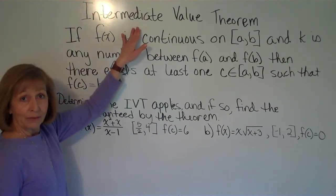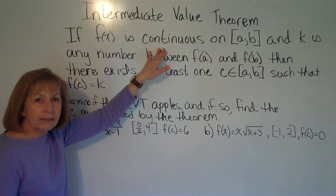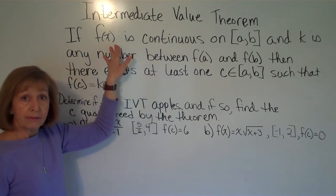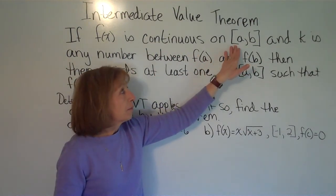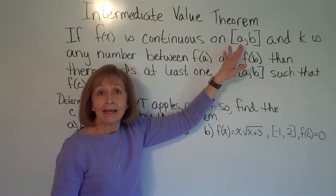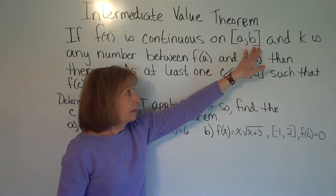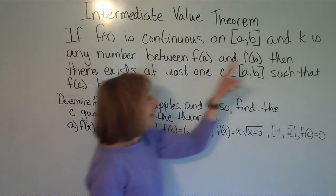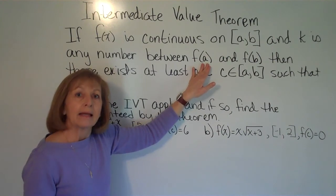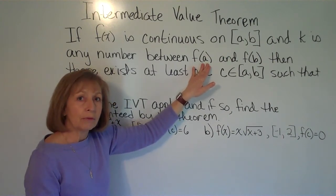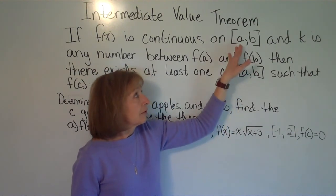The Intermediate Value Theorem says: if f(x) is continuous — meaning you can draw it without picking up your pencil — and it passes the vertical line test, on a closed interval (brackets at each end mean the function is defined at both endpoints), and k is any number between f(a) — the output when you run a through the function — and f(b) — the output when you run b through the function — so between the outputs at the left and right endpoints...